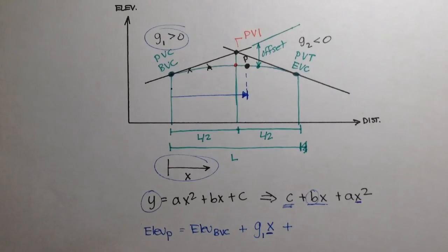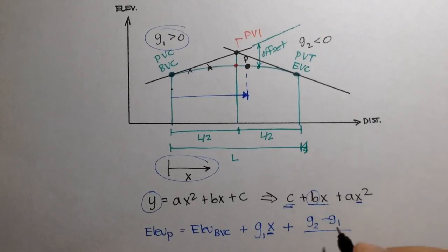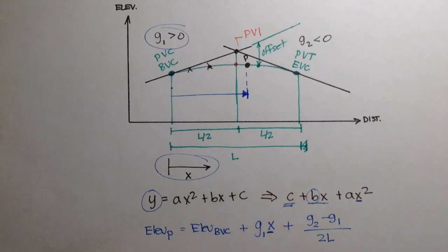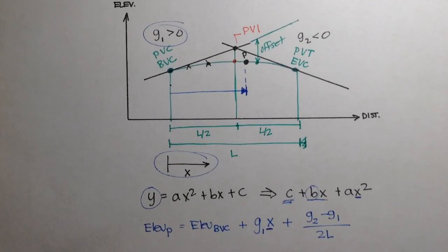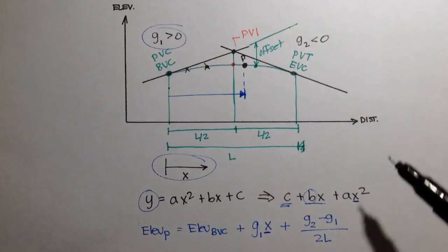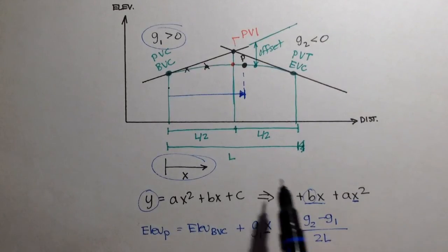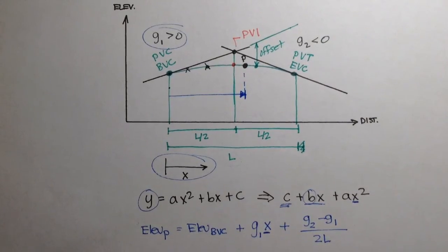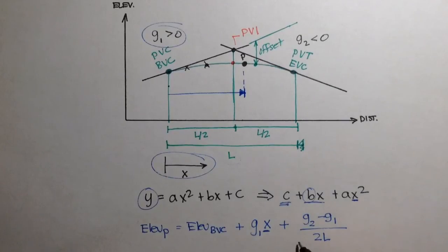And then a is actually a special little formula. It's the difference in grades divided by twice the length of the curve. So the difference in grade, grade 2 minus grade 1, divided by 2 times L. So this is a, and then you have x squared.